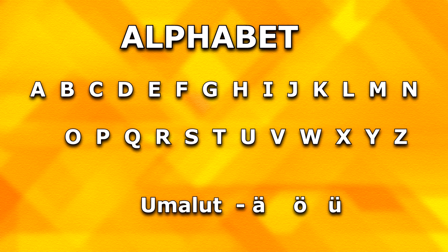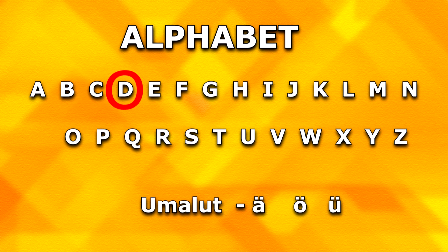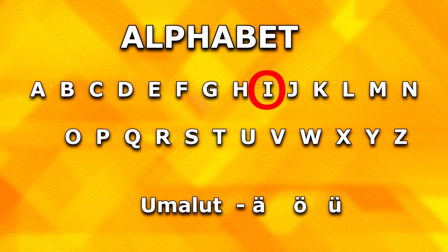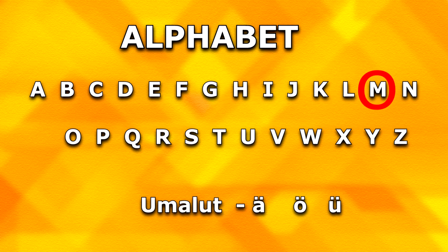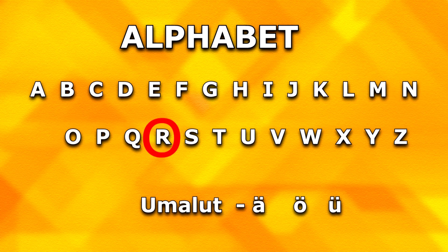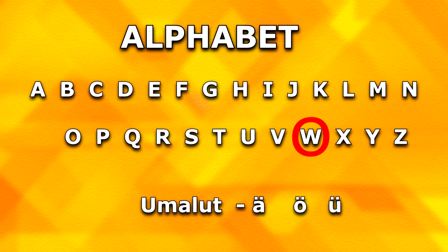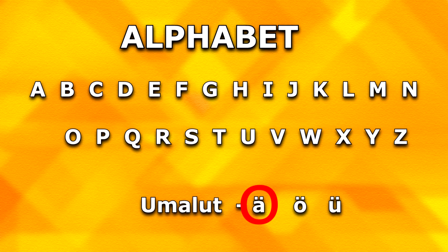Let us quickly go through the alphabets again: A, B, C, D, E, F, G, H, I, J, K, L, M, N, O, P, Q, R, S, T, U, V, W, X, Y, Z — and do not forget the umlaut letters: A-Umlaut, O-Umlaut, U-Umlaut.